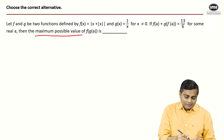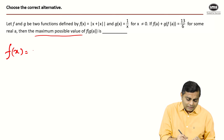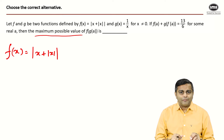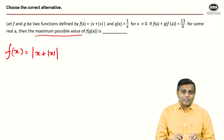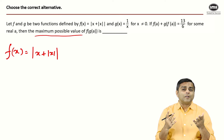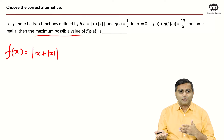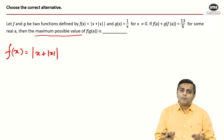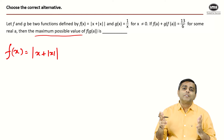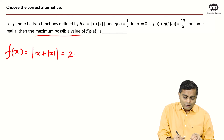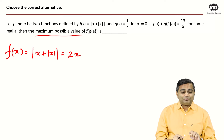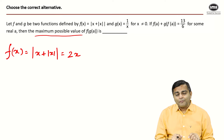Think properly: x can either be positive or negative. If x is positive, the innermost |x| opens without doing anything since x itself is positive. So the expression becomes |x + x| = |2x|, and since x is positive, this is simply 2x. So when x is positive, f(x) reduces to just 2x.